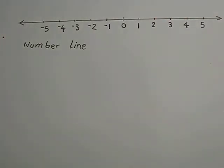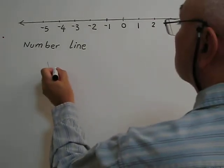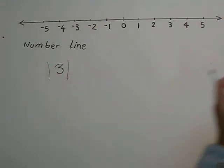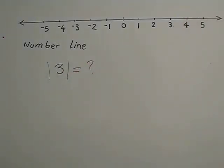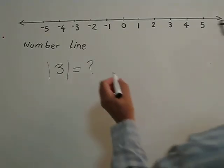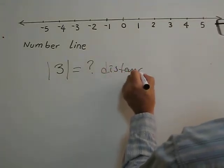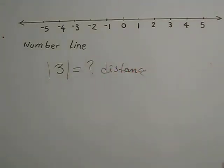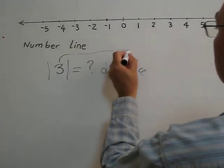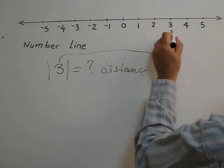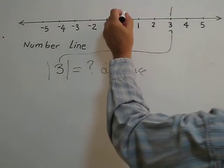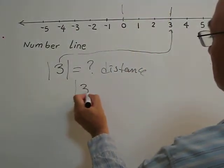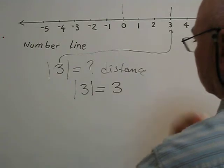For example, what is the absolute value of three? As I mentioned at the beginning, absolute value means distance from the origin. So what is the distance from the origin? We look for positive three on the number line — we find it here. What is the distance from the origin? Three units. So the absolute value of positive three is three.